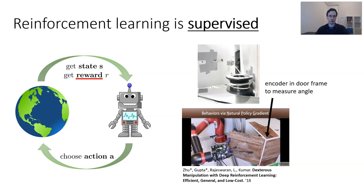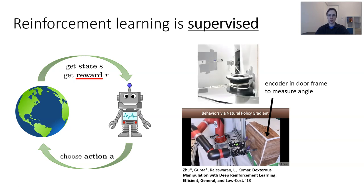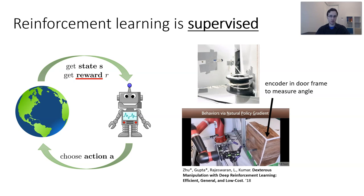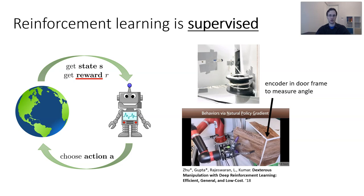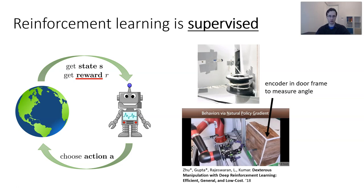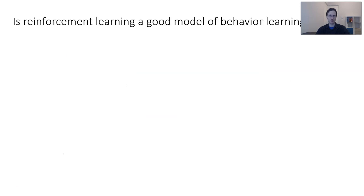This allowed us to conduct our experiment, but of course this is not a recipe for general autonomous learning in the real world, because most doors don't have encoders and reels of string. In fact, we could even ask the deeper question: is reinforcement learning actually a good model of behavior learning in general?